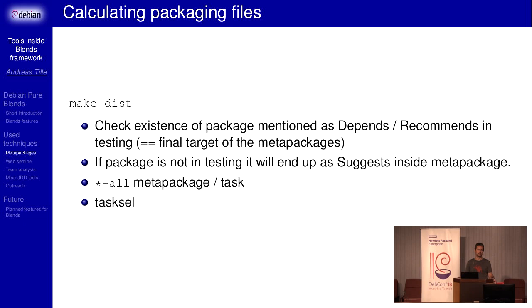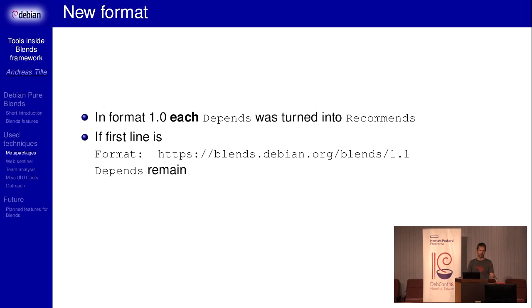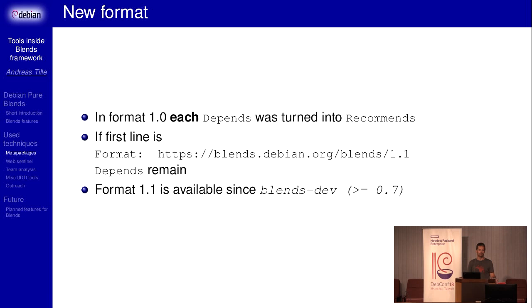What about this new format? Formerly, meta packages were defined so that they do not contain any hard depends — they only contained recommends, for good reasons. But it turned out that in some very special cases we need hard depends, and it was not possible with format 1.0. Format 1.1 will keep depends as depends and not degrade them to recommends. It is available since blends-dev 0.7.